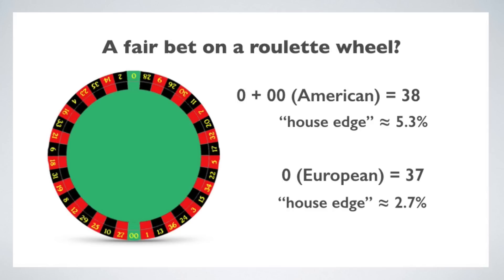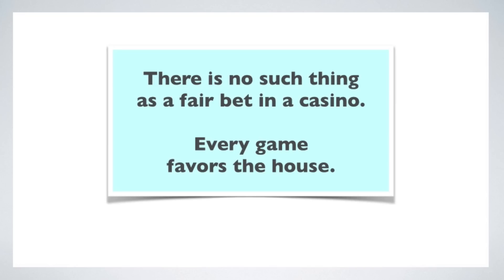Roulette is one example of a general principle: there is no such thing as a fair bet in a casino. Every game favors the house, either by manipulating the behavior of the chance setup, or manipulating the payoffs, or both. That's how casinos make their money. Not all games are the same — a game like blackjack is different in that a skilled player can overcome at least part of the house advantage, but even blackjack will yield a predictable average return to the house.